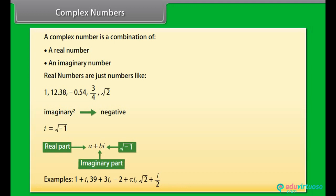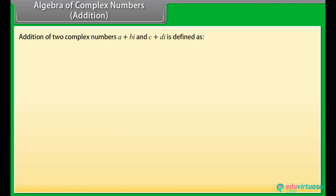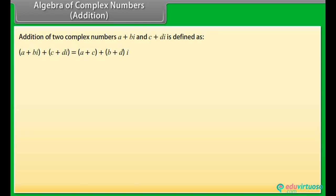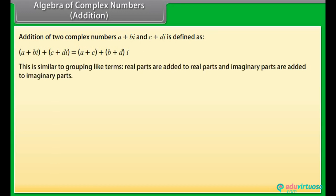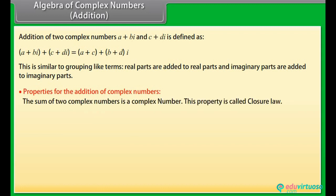Algebra of complex numbers — Addition: The addition of two complex numbers A plus B iota and C plus D iota is defined as A plus B iota plus C plus D iota, which equals A plus C plus B plus D iota. This is similar to grouping like terms: real parts are added to real parts and imaginary parts are added to imaginary parts.